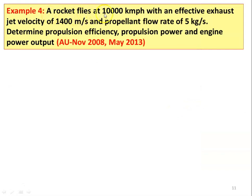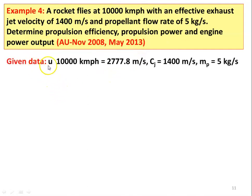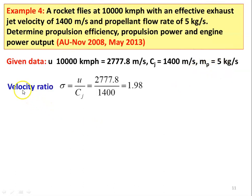Example number 4: A rocket flies at 10000 kilometers per hour with an effective exhaust jet velocity of 1400 meters per second and propellant flow rate of 5 kilograms per second. Determine propulsion efficiency, propulsion power, and engine power output. From November 2008 and May 2013. Given data: rocket speed U = 10000 km/h = 2777.8 m/s, jet velocity Cj = 1400 m/s, MP = 5 kg/s. Velocity ratio σ = U / Cj = 2777.8 / 1400 = 1.98.